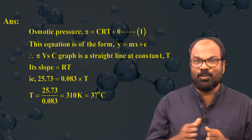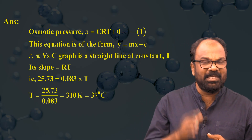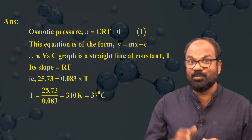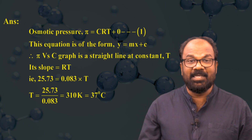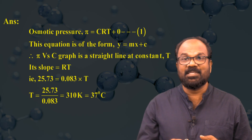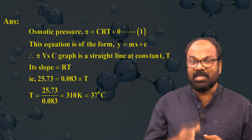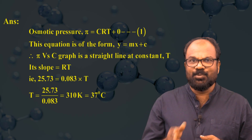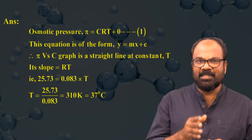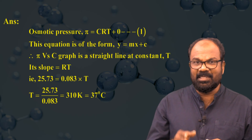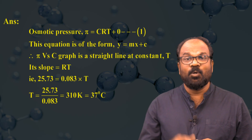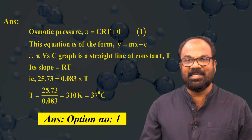Adding a zero intercept, the equation π = CRT is of the form y = mx + c, so the π vs C graph is a straight line at constant temperature T with slope equal to R×T. The slope is given as 25.73, so 25.73 = 0.083 × T, therefore T = 25.73 / 0.083 = 310 K = 37°C. The answer is option number one.